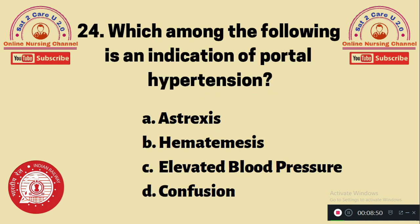Question 24: Which among the following is an indication of portal hypertension? A. Asterixis, B. Hematemesis, C. Elevated blood pressure, D. Confusion. Portal hypertension occurs due to liver failure, and asterixis is a common indication of portal hypertension. The answer is A.